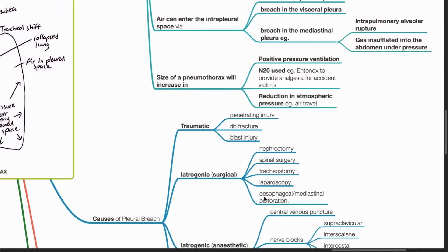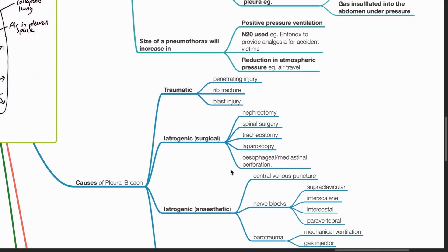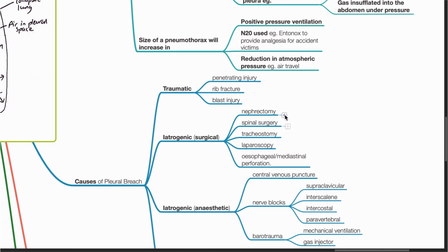Causes of pleural breach include traumatic causes such as penetrating injury, rib fractures, or blast injuries. Surgeries at risk of pneumothorax include nephrectomy, spinal surgery, tracheostomy, laparoscopic, or esophageal mediastinal perforation.